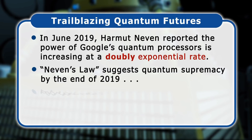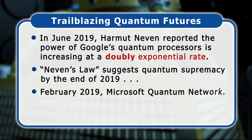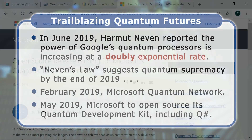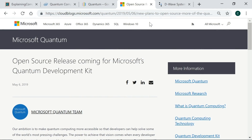Also in the game, in February 2019 Microsoft announced the Microsoft Quantum Network to advance quantum computing, formalising a previous coalition of partnerships. In May 2019, Microsoft also reported that it will open source its Quantum Development Kit, which includes its Q# quantum computing programming language and compiler as well as quantum computing simulators.